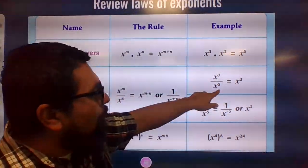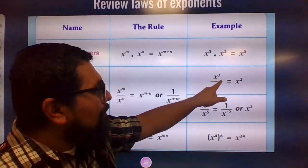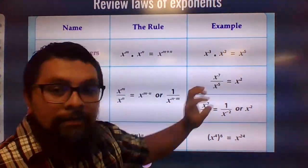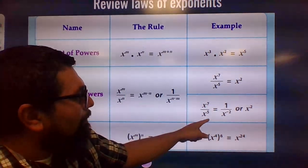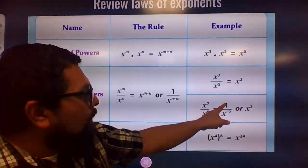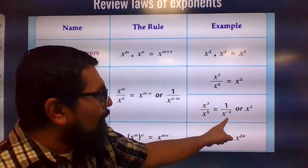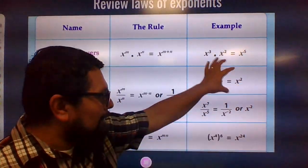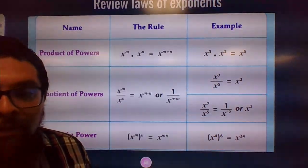X to the power of seven over X to the power of five. Seven minus five is two. There it is. Here's another example. Seven minus five equals one over X to the... So we can write this one like this or like that. It's the same thing.